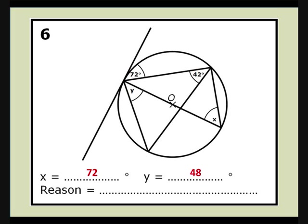Alternatively, the angle in the semicircle is 90 degrees, meaning that the 42 is next to a 48, and then we can use the bow tie angles in the same segment to show that y is the same as the 48 degrees.